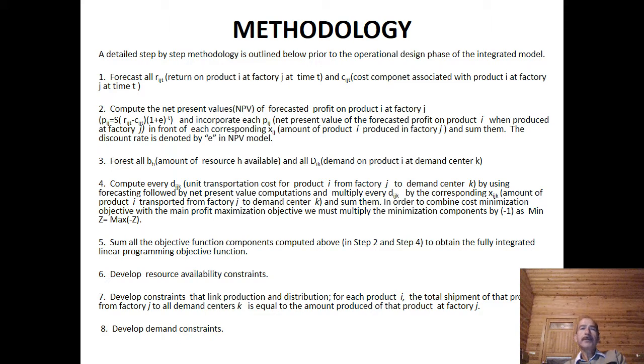After that, we can find the difference between the returns and costs and we can compute the net present value of the forecasted profits by projecting the cash flows to the present time by using a suitable discount rate. We must also forecast the right hand side of the resource constraints. We must also forecast the unit transportation costs for all the products that are shipped from various factories to various demand centers. And after the forecasting procedure, we use the net present value model and we get the final transportation cost coefficients.